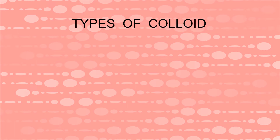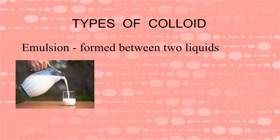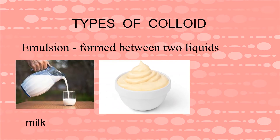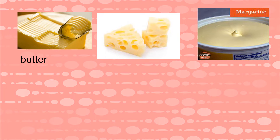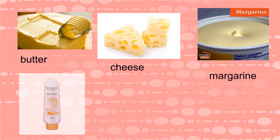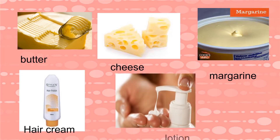There are different types of colloid. One type has examples such as water, cheese, margarine, hair cream, and lotion.